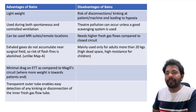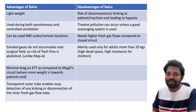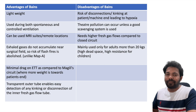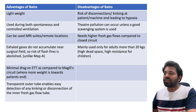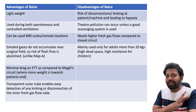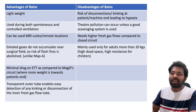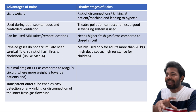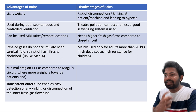Advantages of the Bain circuit include: it is lightweight, portable, and transparent; it can be used during both spontaneous and controlled ventilation; it can be used at remote locations such as MRI and angiography suites; exhaled gases do not accumulate near the surgical field, abolishing the risk of flash fires (unlike Mapleson A, where the APL valve near the patient's end can allow combustible gases); minimal drag on the ET tube; and the transparent outer tube enables easy detection of kinking or disconnection of the inner fresh gas flow tube.